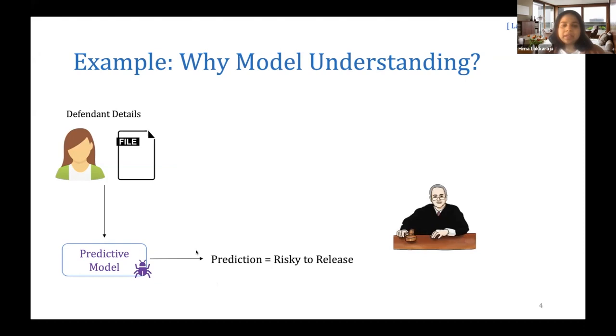For example, let's say there is a predictive model which ingests defendant details, such as their demographics and past criminal records, and makes a prediction of whether that defendant is risky to release or not. If the judge just looks at this prediction, there is very little they can know or understand about how much to rely on it.